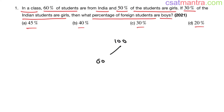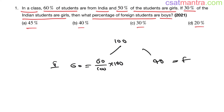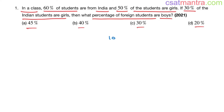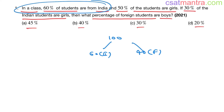So in this class we have 100 students. 60% means 60/100 × 100 = 60, so 60 students are Indians. If 60 students are Indians, then 100 − 60 = 40 students are foreigners.